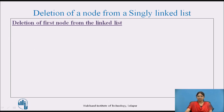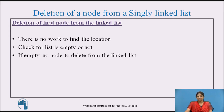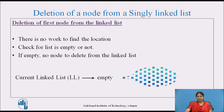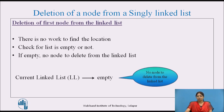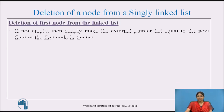Deletion of the first node from the linked list: In this case, there is no need to find the location. We only need to check if the list is empty or not. If the list is empty, there is no node to delete. If it is not empty, we can simply make the external pointer list equal to the next field of the first node.